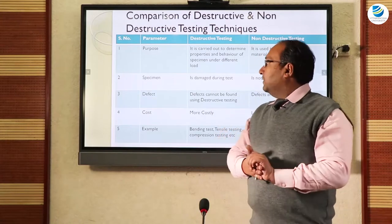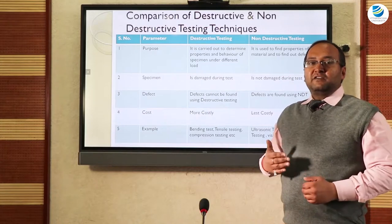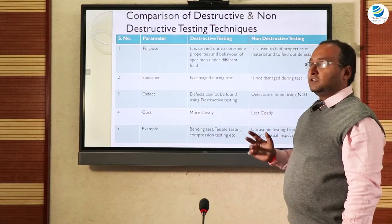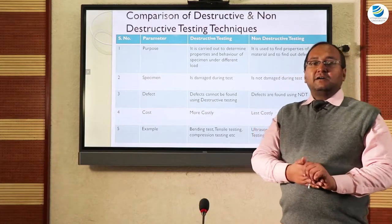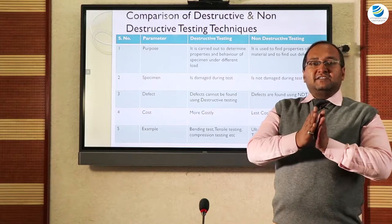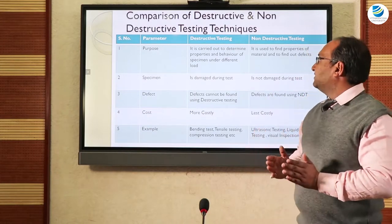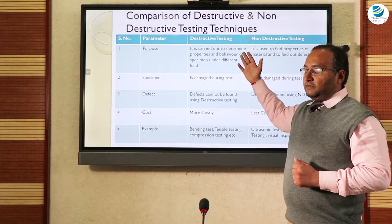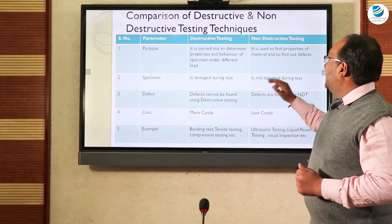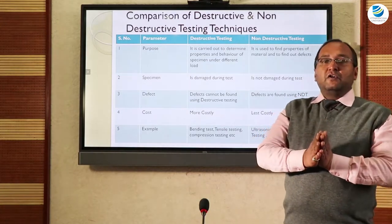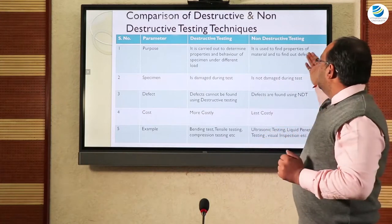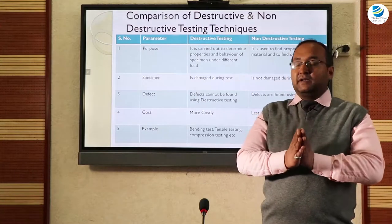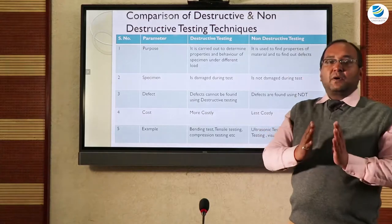There are certain parameters on the basis of which we classify destructive and non-destructive testing. The first is purpose. Destructive testing is carried out to determine physical properties of the material — such as shear strength, longitudinal strength, or compressive strength under different loading conditions. Non-destructive testing is used when we do not want to fail the material but simply want to check whether it is uniform or not, and to find defects.